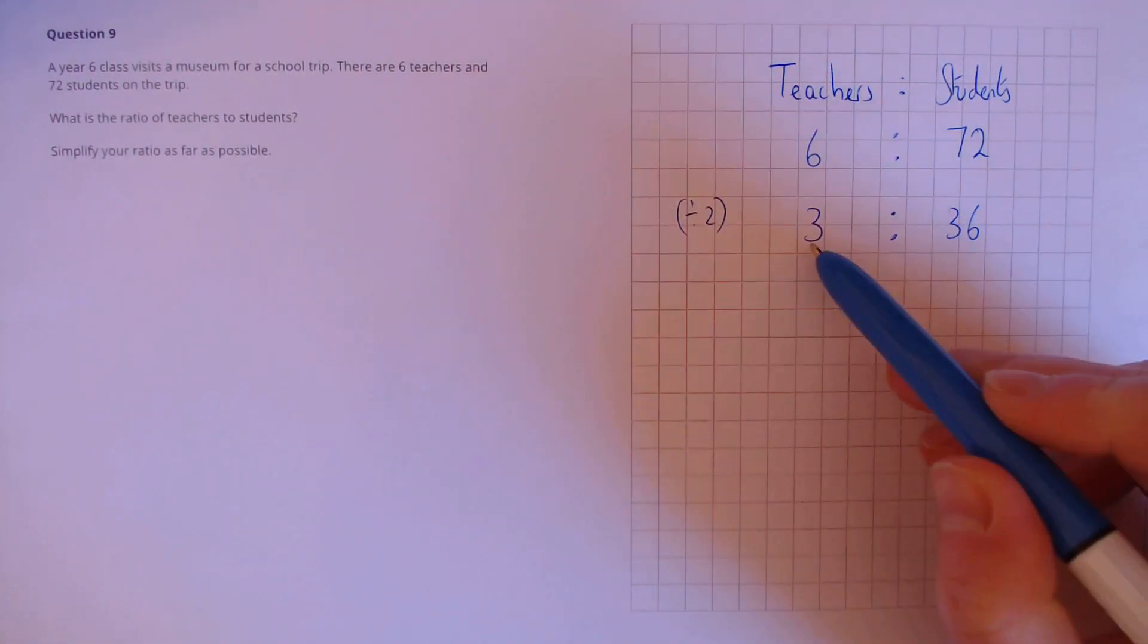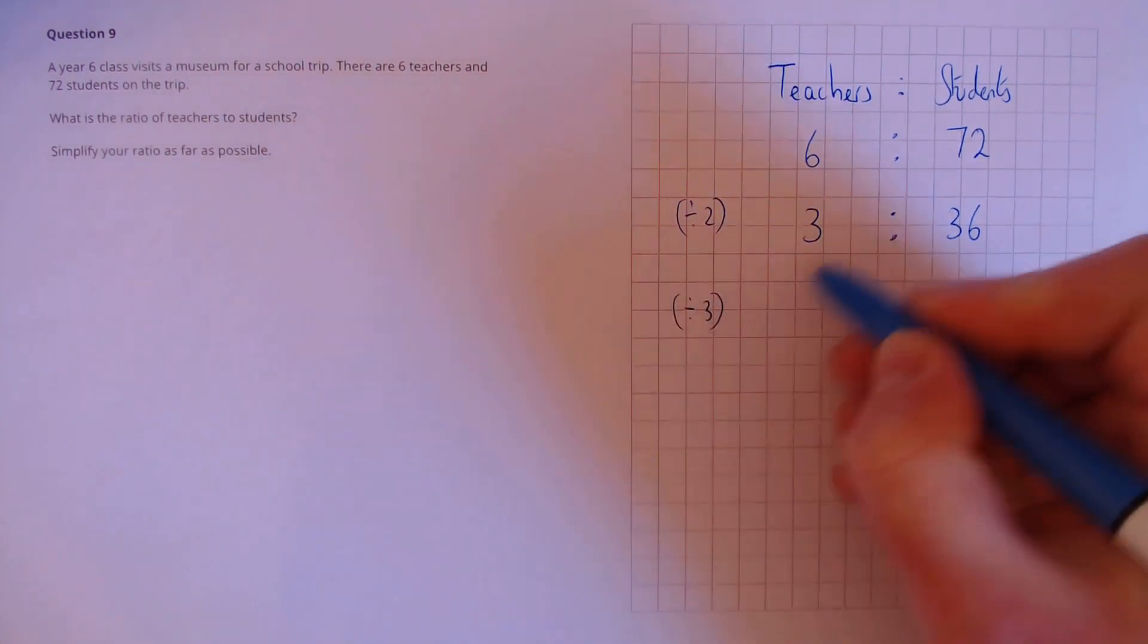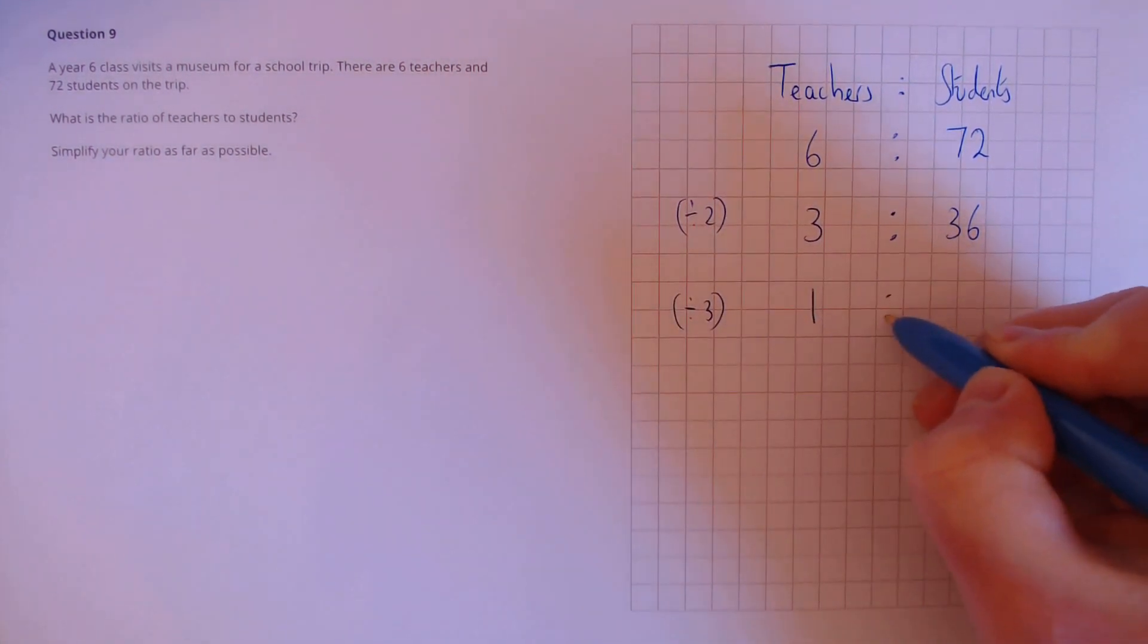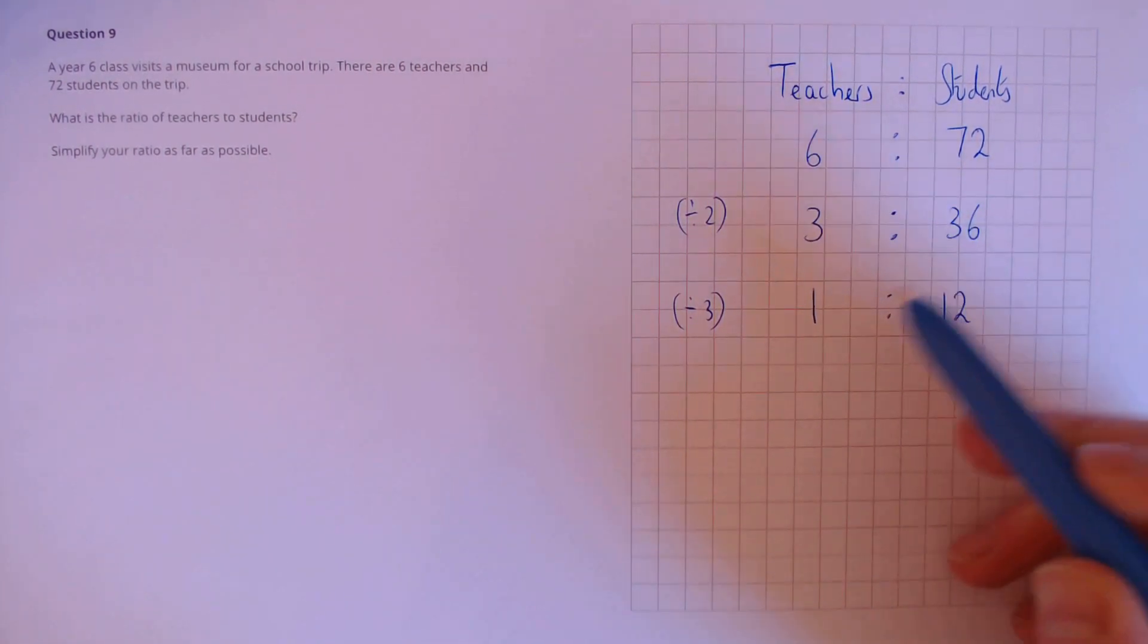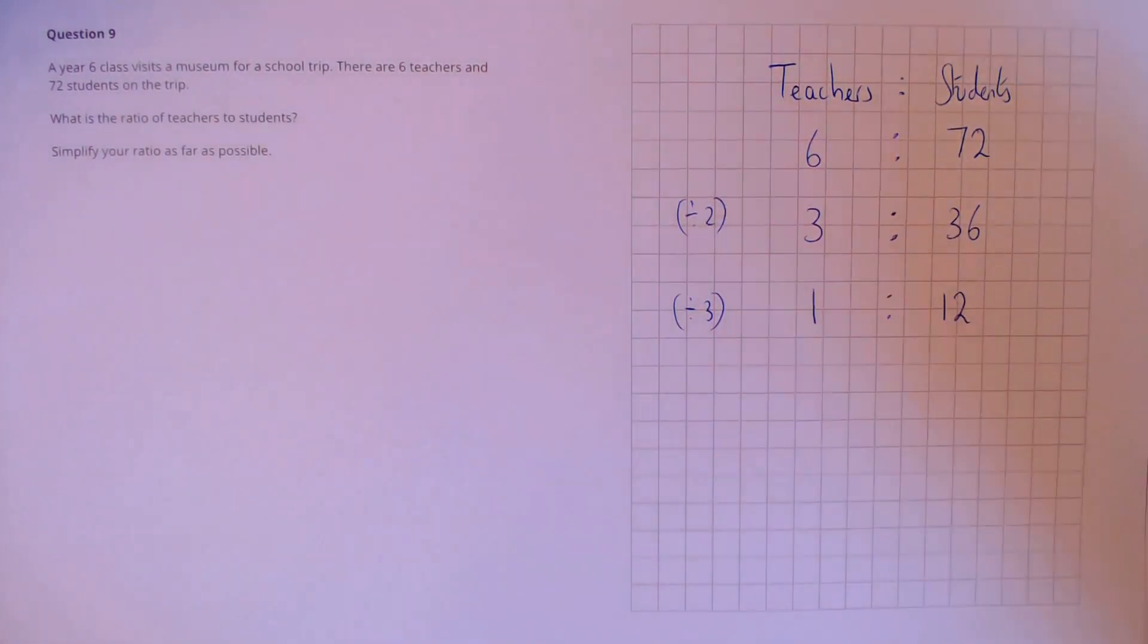Next, we notice that we can divide by 3. 3 divided by 3 is 1, and 36 divided by 3 is 12, which gives us our simplified ratio of 1 teacher to 12 students.